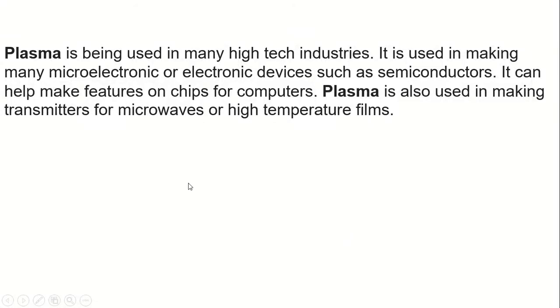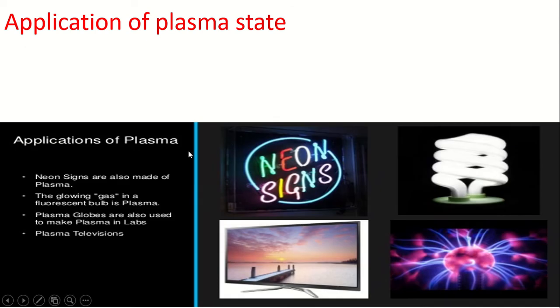Plasma is being used in many high tech industries. Here are the applications of plasma state. It is used in making many microelectronics or electronic devices such as semiconductors. It can help make features on chips for computers. Plasma is also used in making transmitters for microwaves or high temperature films. Here are the applications of plasma. This is plasma TV, neon signs. This is the bulb, an antiseptic bulb.